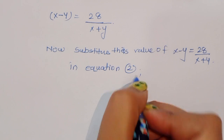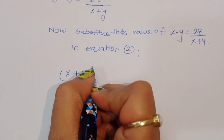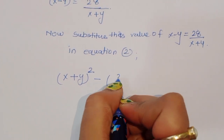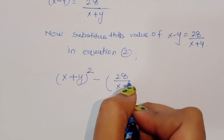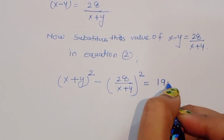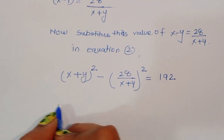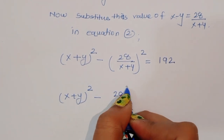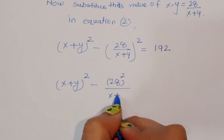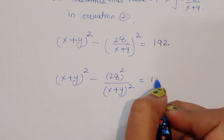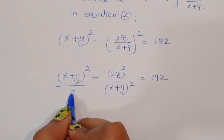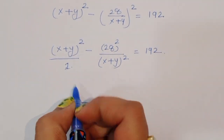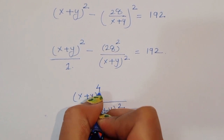Substituting into equation 2, we get: x plus y whole square minus x minus y, which is 28 divided by x plus y, whole square is equal to 192. We can write this as x plus y whole square minus 28 squared divided by x plus y whole square is equal to 192. Taking LCM, which gives x plus y to the power 4 in the numerator.